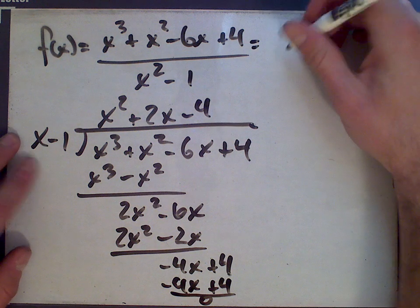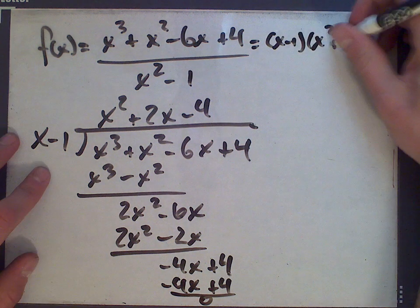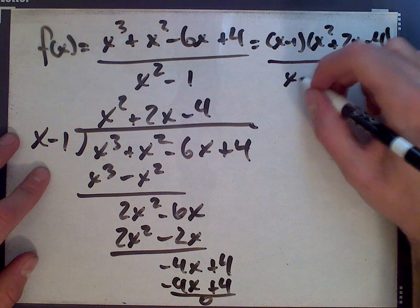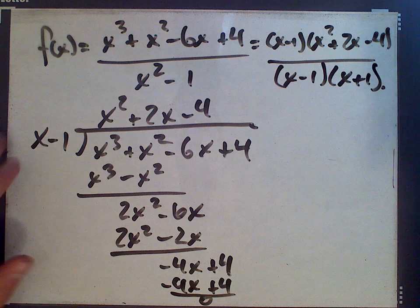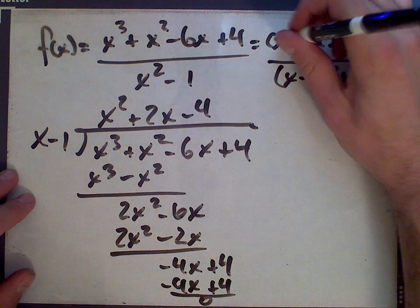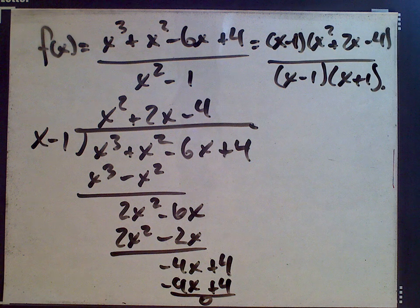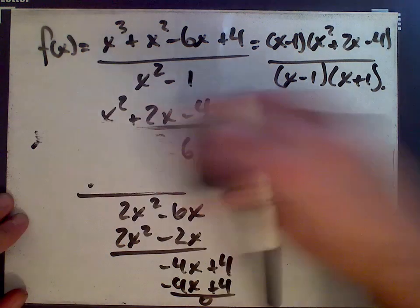And so this factors as x minus 1 times x squared plus 2x minus 4 divided by x minus 1 times x plus 1, which is the bottom factor. This is x minus 1 here. I hope you can see that. Let me erase this long division.